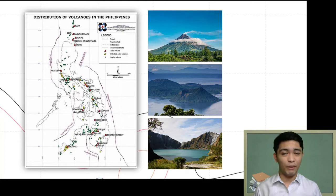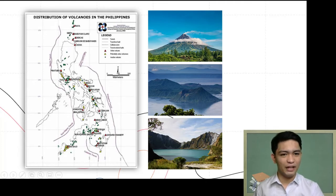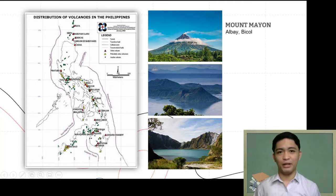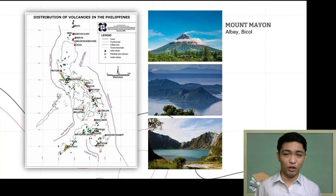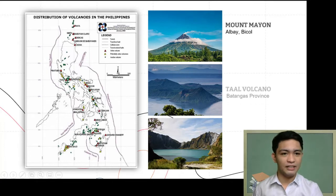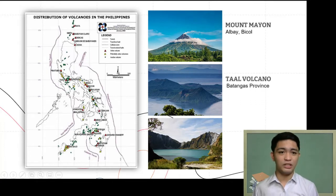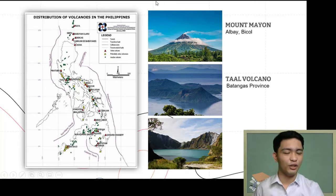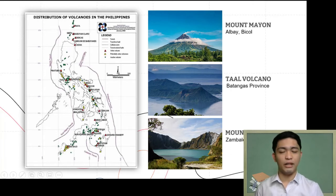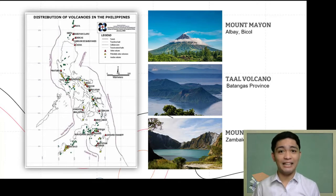The first one is of course the very popular Mount Mayon, or Mayon Volcano, in Albay, Bicol — the one with an almost perfect cone shape. The second one is Taal Volcano, found in Batangas Province — if you've been to Tagaytay you would have seen it. And the third picture is Mount Pinatubo in Zambales Province.